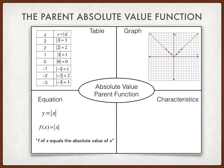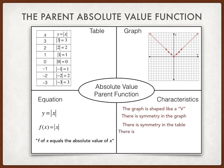So now what we can do is look for characteristics. The first thing that jumps out is the graph is shaped like a V. There is symmetry in the graph, so the left-hand side matches the right-hand side. There's also symmetry in the table.